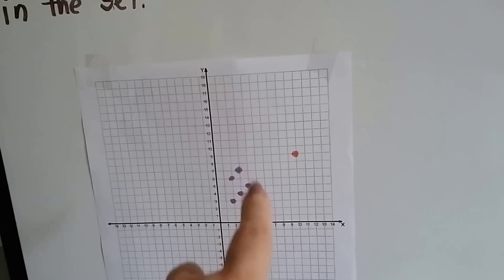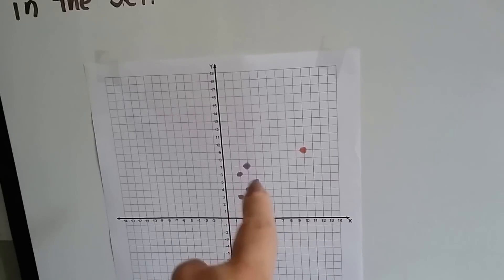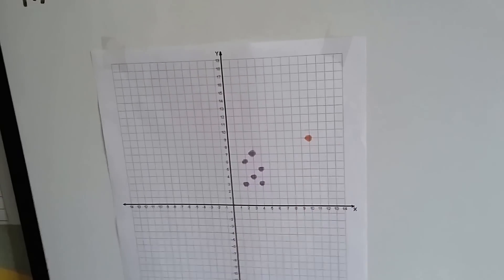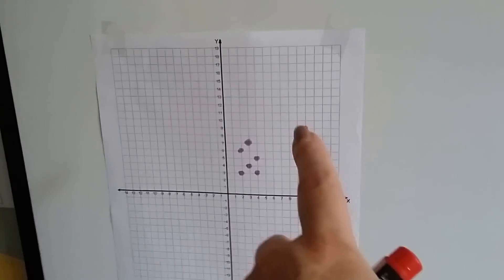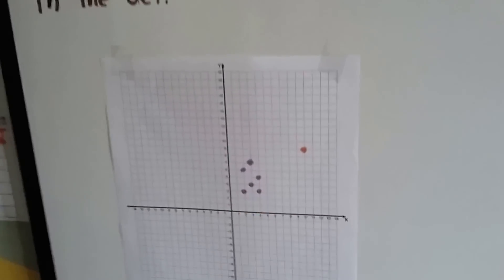Or it could be a group of children who got a certain grade on a test and then one did exceptionally well. So that one out here is the outlier and that's the cluster.